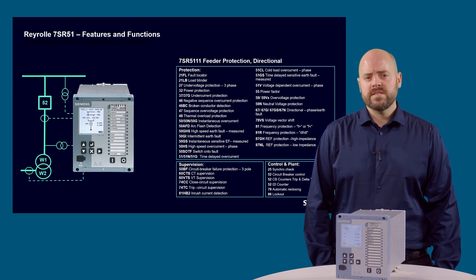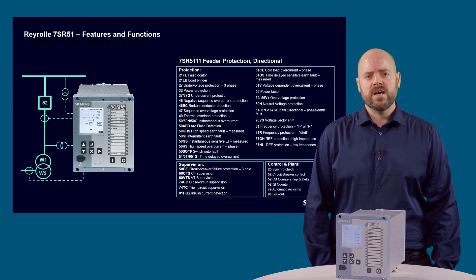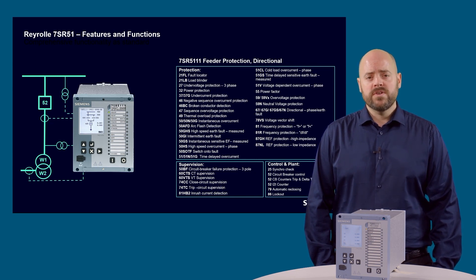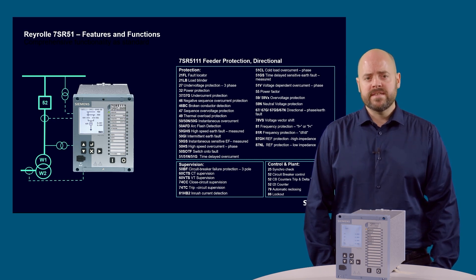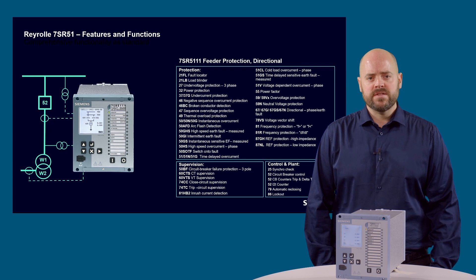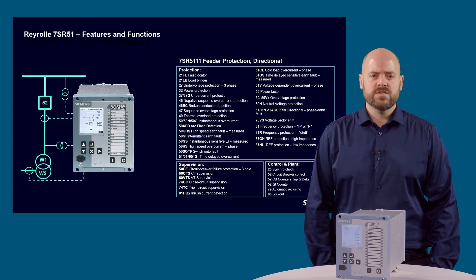The 7SR5111 directional overcurrent and directional earth fault protection devices are used in interconnected systems. As standard these have 4CT inputs and 4VT inputs, allowing additional functionality over the 7SR5110. Also available are 7SR5121 devices with 5CT inputs, typically used in transformer circuits, providing overcurrent and earth fault functions as well as measured standby earth fault to protect the earthing resistor and high-impedance earth fault protection for the transformer winding.